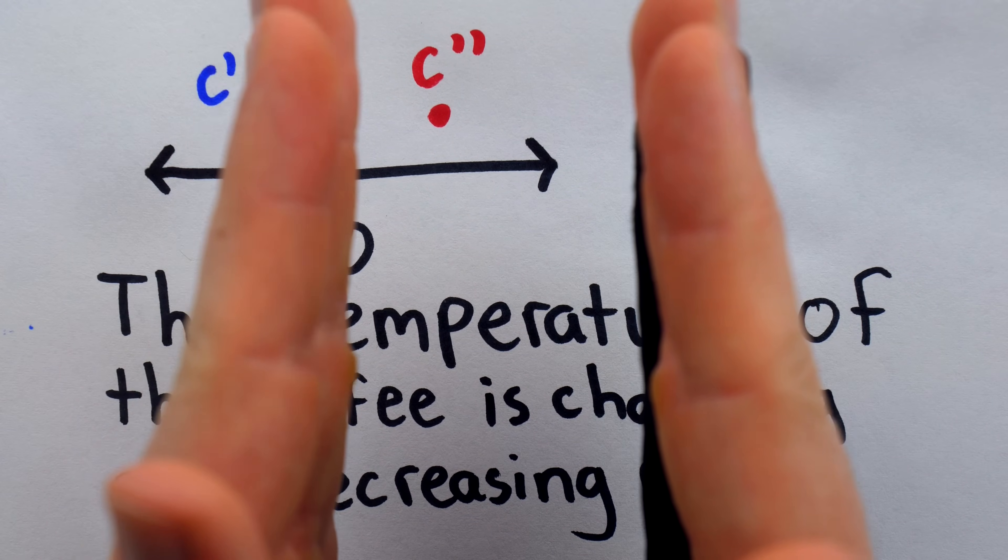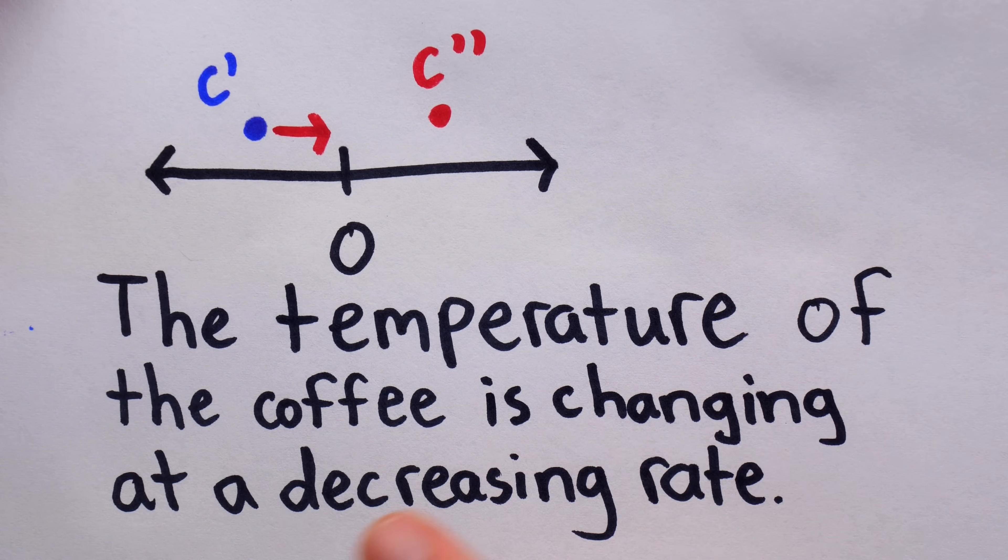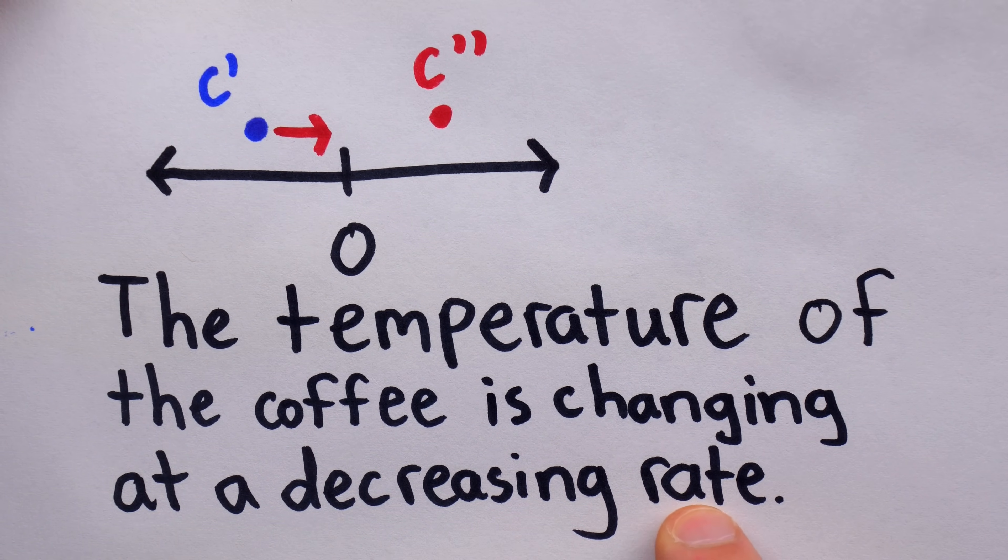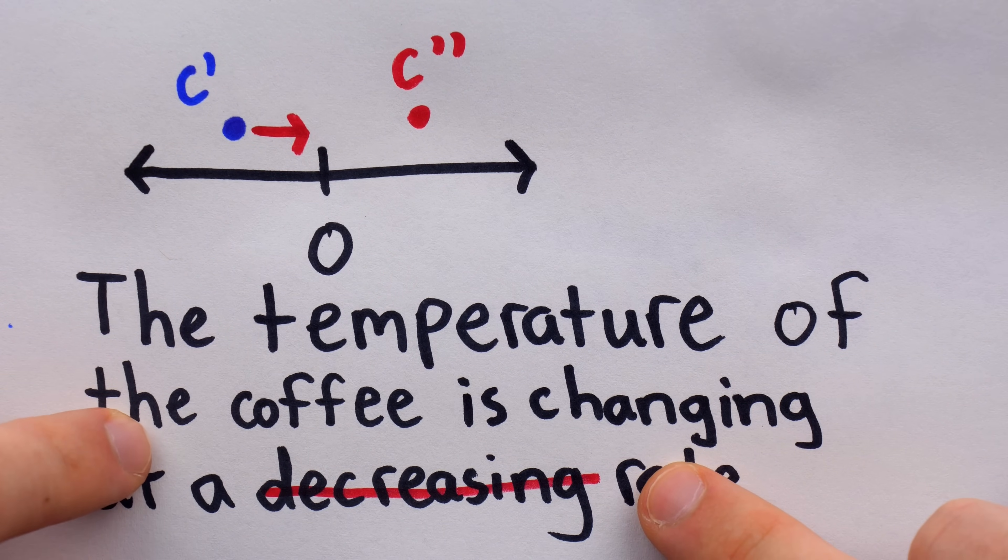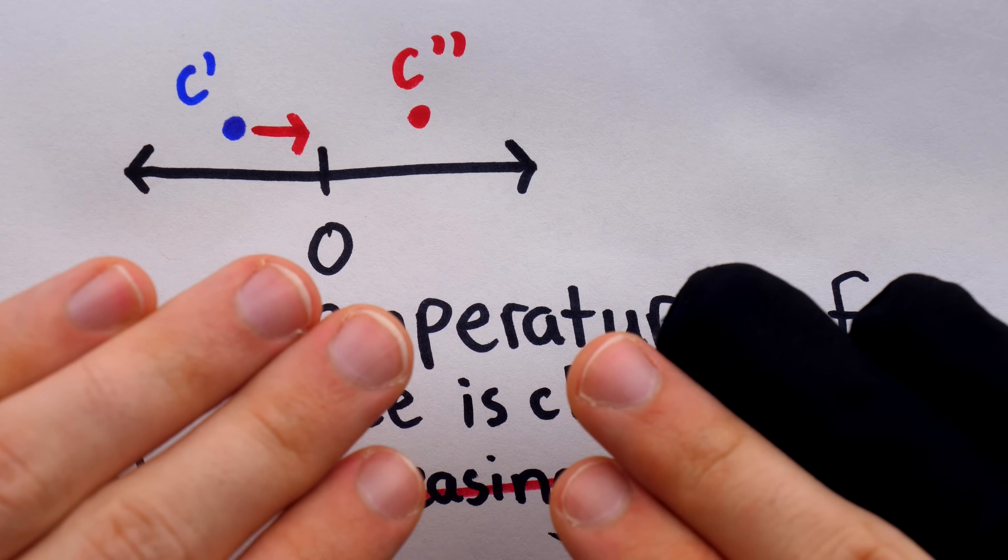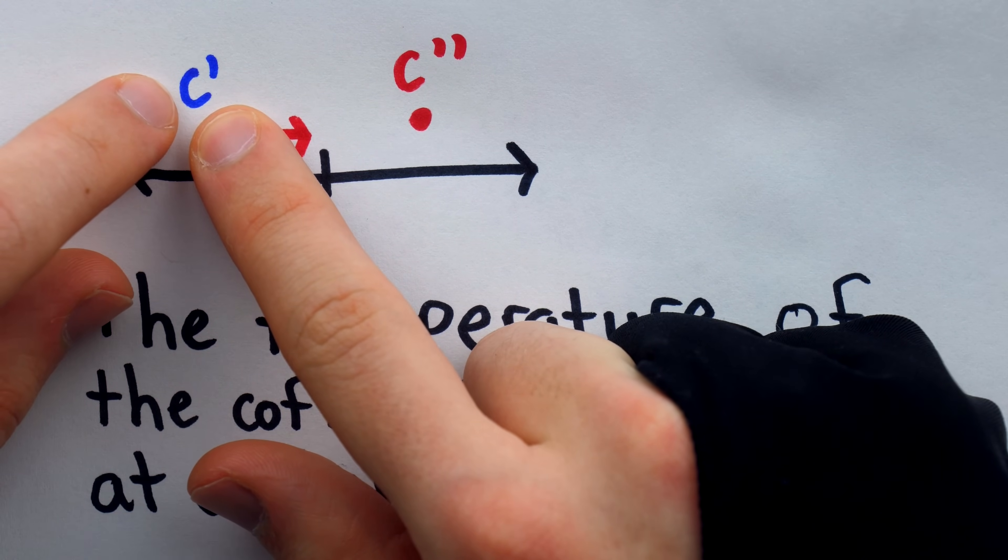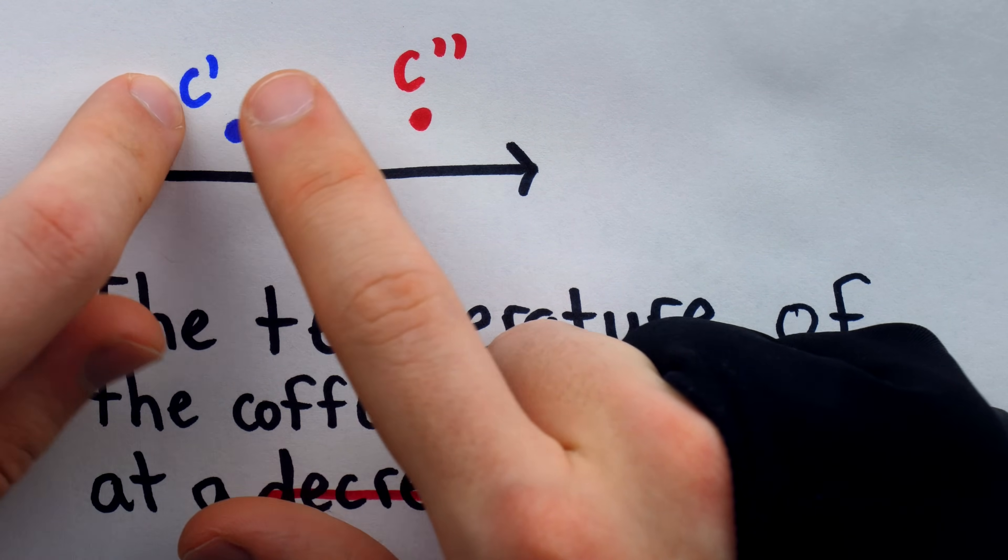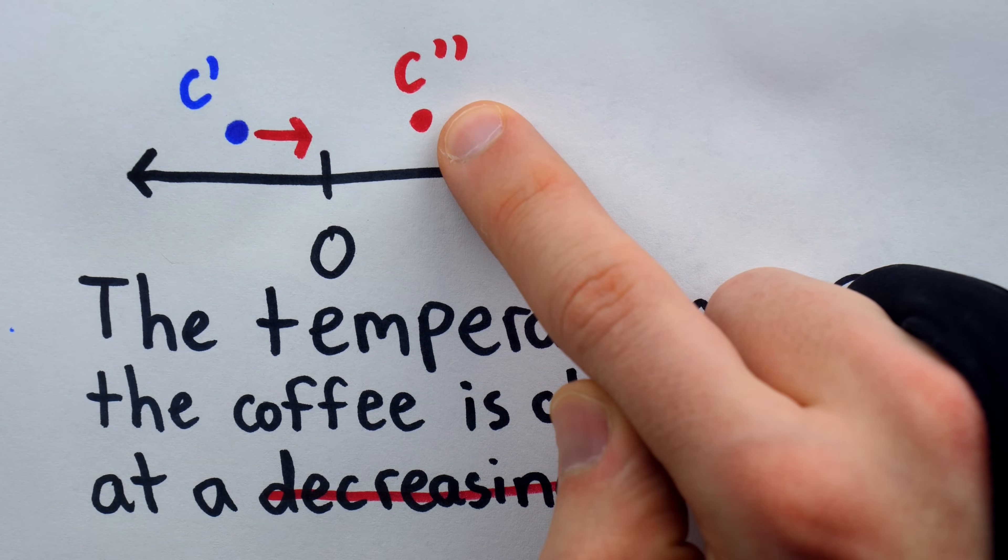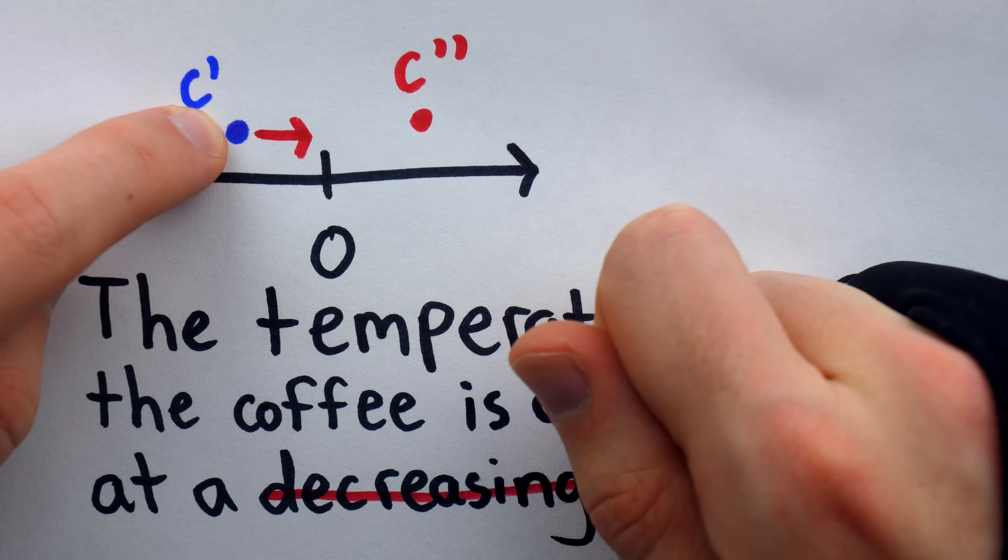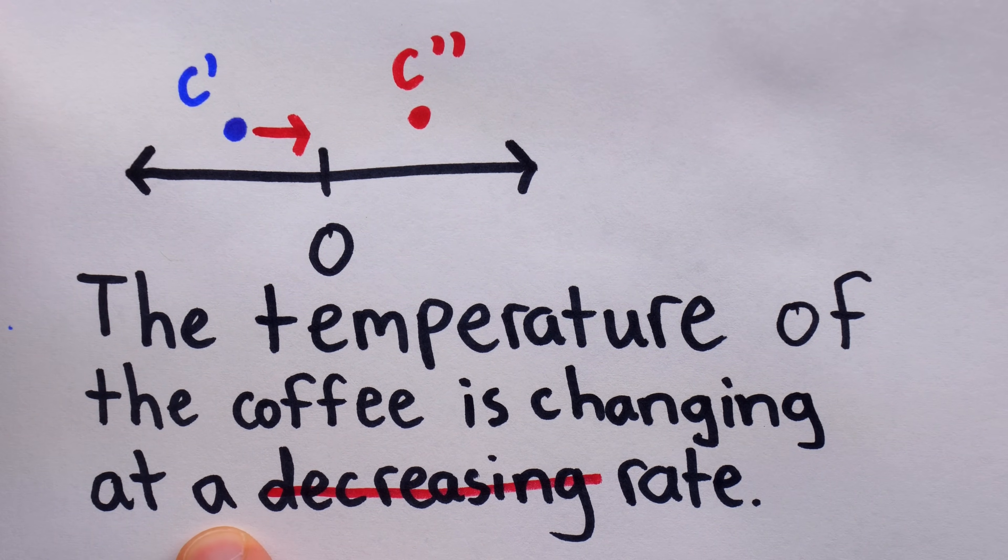If the changes in temperature are becoming smaller, you can see why someone would say that the temperature of the coffee is changing at a decreasing rate. However, this is not the correct solution. Really interpreting it this way, I think is a result of a little bit of overthinking. The rate of change of the temperature is C prime. And the rate of change of that, which is what we're asked about, is C double prime. C double prime is positive. This means that C prime is increasing and thus the temperature of the coffee is changing at an increasing rate.